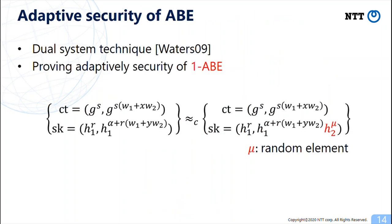The standard way to achieve adaptive security of ABE is the dual-system technique by Waters. Roughly speaking, it is sufficient to prove the indistinguishability of 1-ABE for the dual-system technique. In 1-ABE, the adversary can obtain one ciphertext and one secret key.